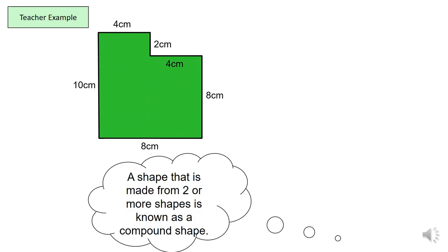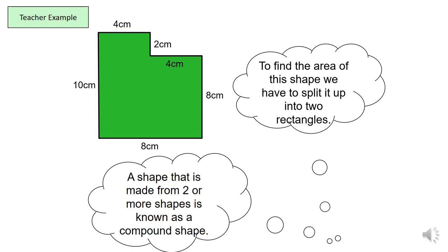Now, we already know what a compound shape is. A compound shape is when you have two or more shapes which are joined together to create another shape. And in order to find the area of compound shapes, we must split the shape into two rectangles. In this case, it will be two rectangles anyway.